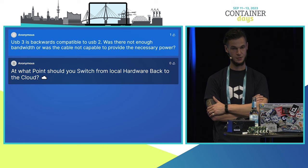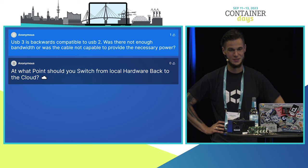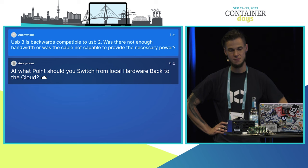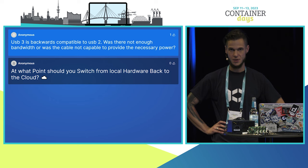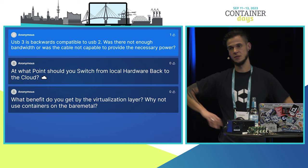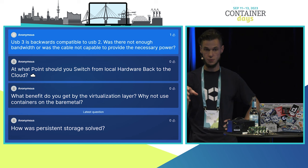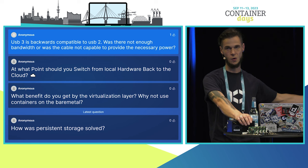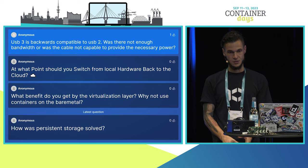Next question: USB 3.0 is backwards compatible to USB 2.0 - was there not enough bandwidth or was the cable not capable of providing the necessary power? The funny thing is it should be backwards compatible, but I debugged it together with the Turing Pi team. They said they are using some parts of the bandwidth that USB 2.0 cannot deliver, because I needed it basically only to flash the eMMC storage inside the computing units - you install your whole Ubuntu via USB.